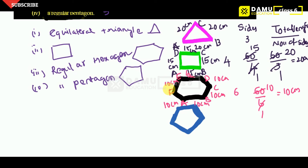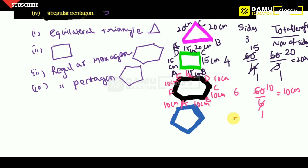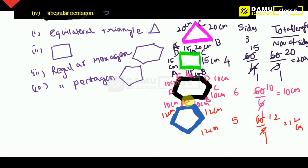Next, regular pentagon has 5 sides. So each side equals 60 divided by 5, which is 12 centimeters. Each side — AB, BC, CD, DE, EA — will be 12 centimeters. So the answers are: equilateral triangle 20 cm, square 15 cm, regular hexagon 10 cm, regular pentagon 12 cm.